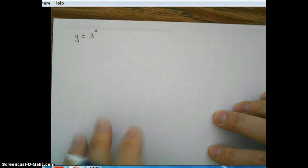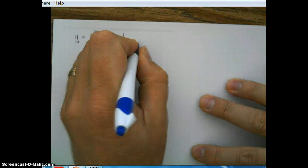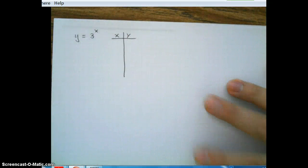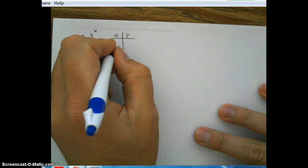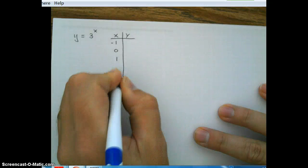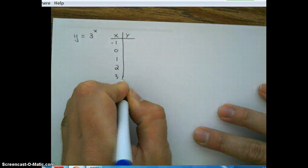Okay, so if I want to graph this parent, I'm going to go ahead and start off by making a table. And I'm going to go ahead and pick some values for x. Let's go ahead and pick a negative.